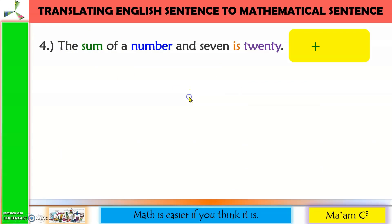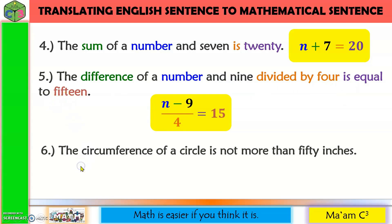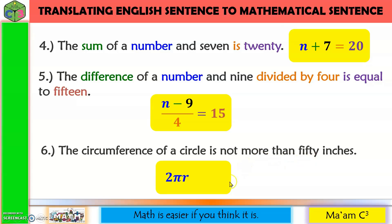Number four: the sum of a number and 7 is 20, written as n + 7 = 20. Number five: the difference of a number and 9. Number six: the formula for the circumference of a circle, 2πr, is not more than 50 inches. Since it could be equal to 50 but not more, we use less than or equal, so 2πr ≤ 50.